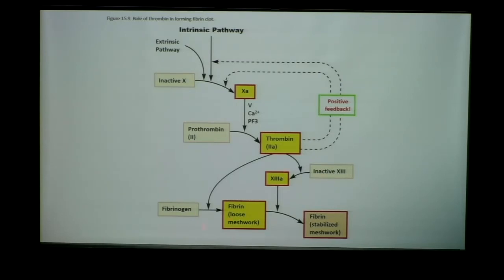Factor 13a has another important role: it's going to stabilize that mesh work. Initially, when fibrinogen is converted to fibrin, this is a loose, temporary, not-so-stable version of the blood clot. Factor 13a comes in and really stabilizes that blood clot, making it more permanent and a more stable form of that clot.